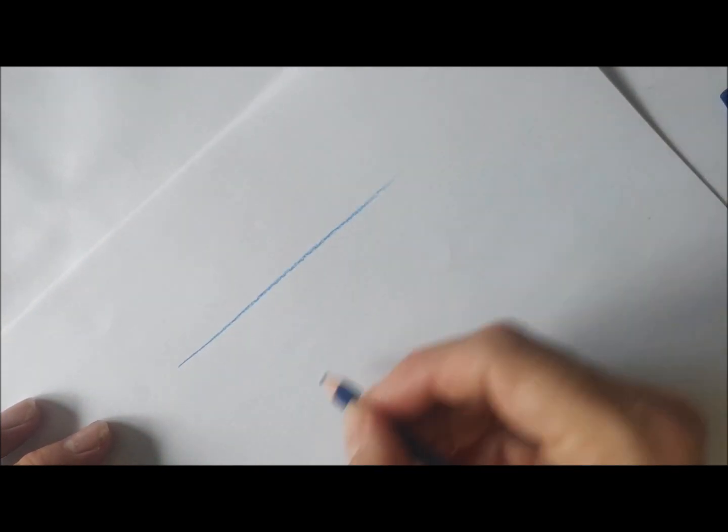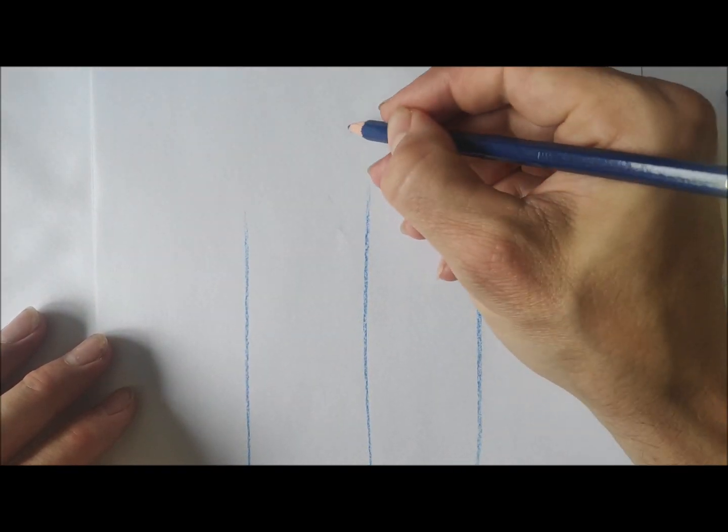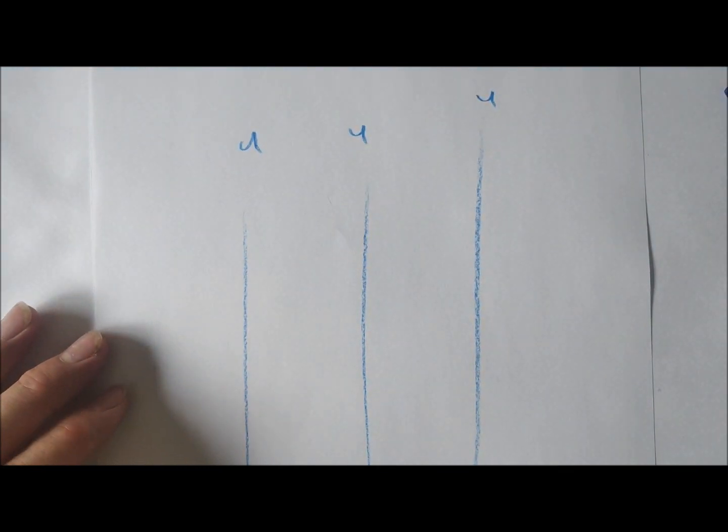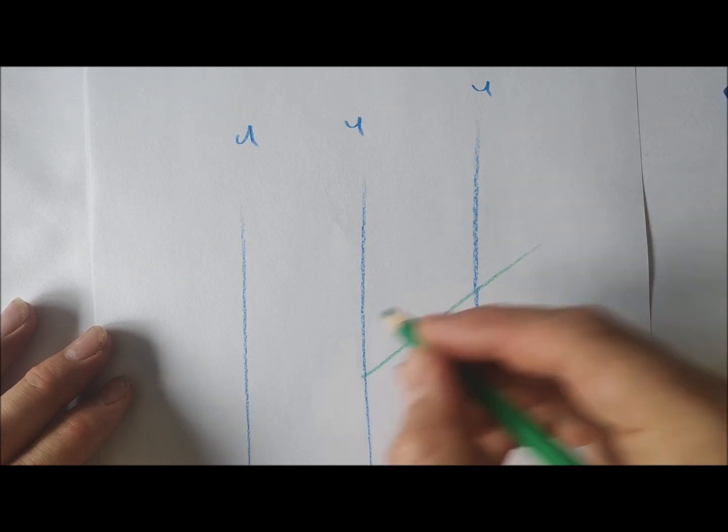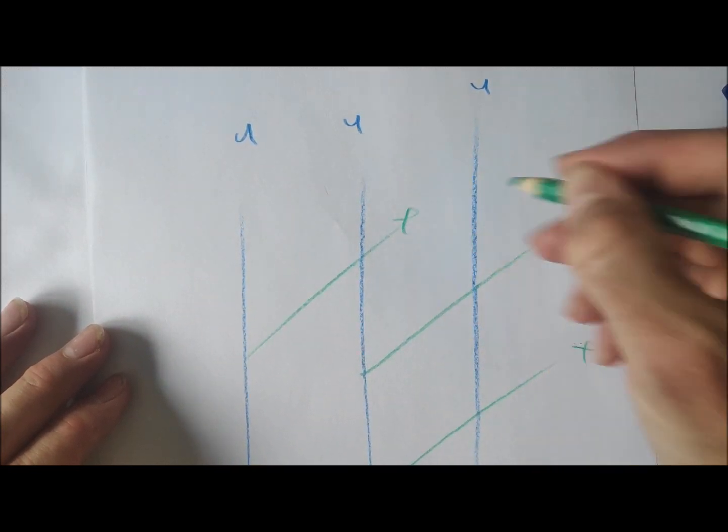And when you get a bit more used to doing this, what you'll find is that you can draw lines going up like this to demonstrate that Y axis. You should find also that you get quite adept at drawing lines off at sort of 30 degrees to each other to show an X axis.